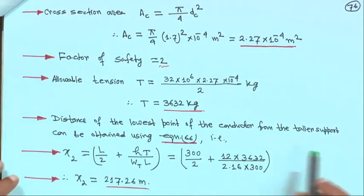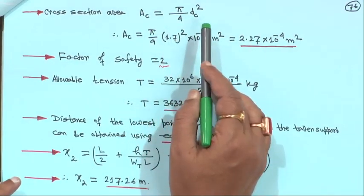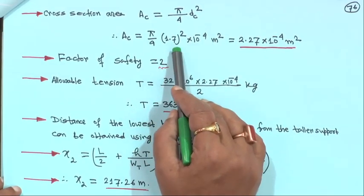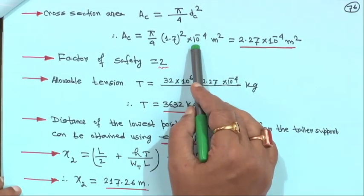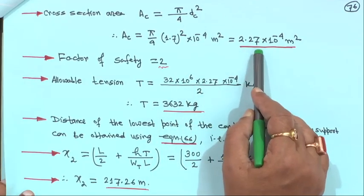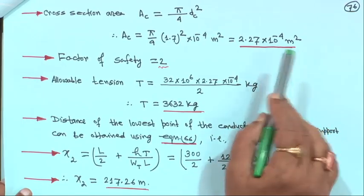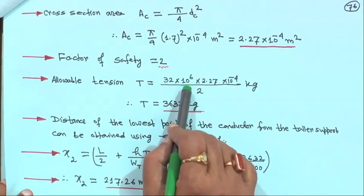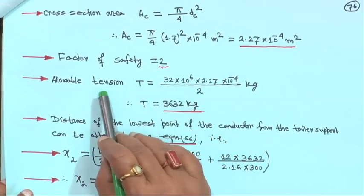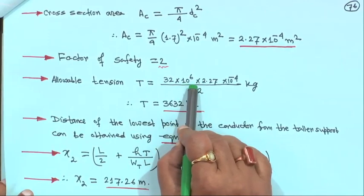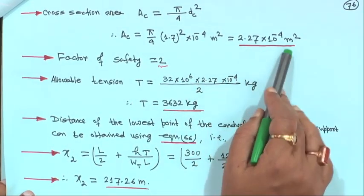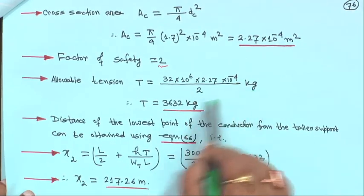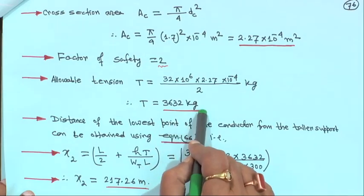Cross section area AC is equal to pi by 4 into DC squared. So AC is pi by 4 into 1.7 squared, converted to meter square, giving 2.27 into 10 to the power minus 4 meter squared. Factor of safety is 2 and ultimate tensile strength is 32 into 10 to the power 6 kg per meter square. Therefore allowable tension T is 32 into 10 to the power 6 into 2.27 into 10 to the power minus 4 divided by 2, giving T equal to 3632 kg.